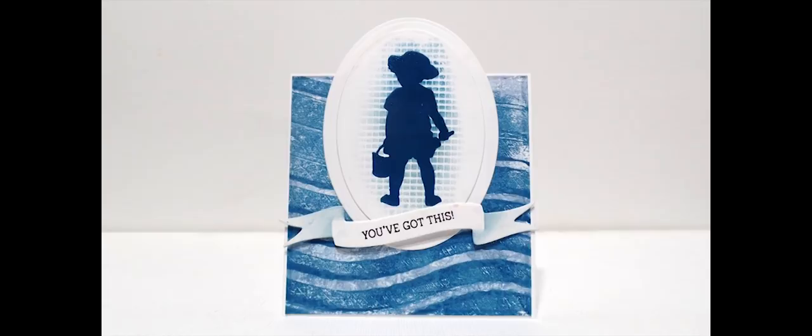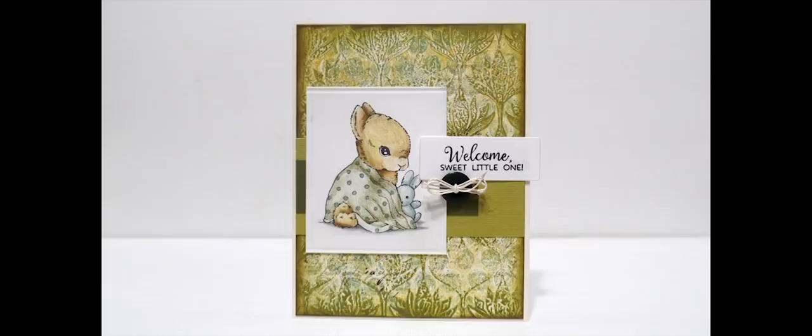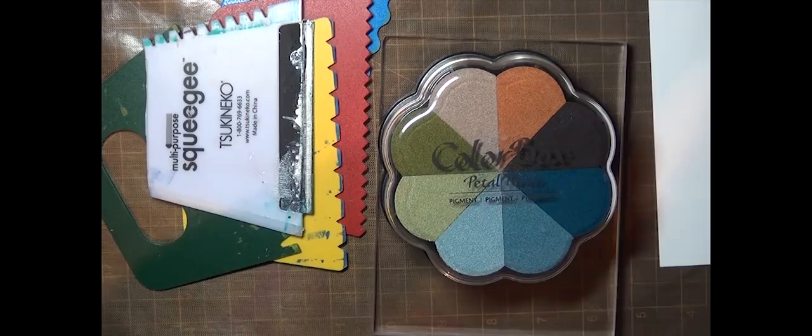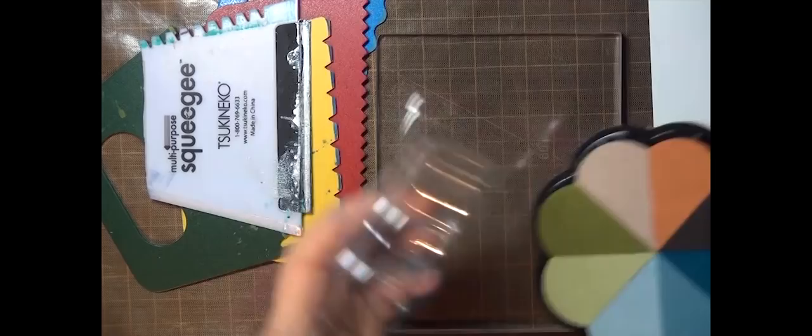Monoprinting is basically printing a one-of-a-kind painting. All of the coloring and the work is done on a non-porous surface with paint or ink, and then transferred to paper. I'm going to be using a large acrylic block for this example, and that's also used in our photo tutorial by Julie Warner. I'm using these Color Box Petal Point inks, which are beautiful pigment inks.